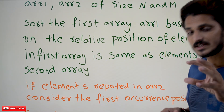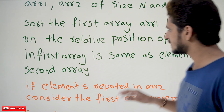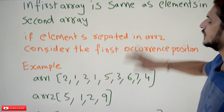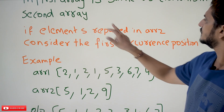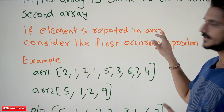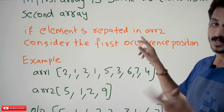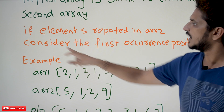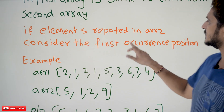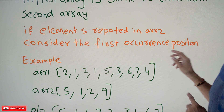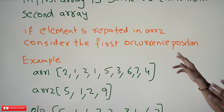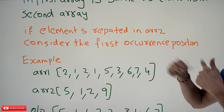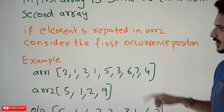With an example you are going to understand it better. If elements are repeated in array 2, if array 2 is having repeated elements, consider the first occurrence position. Based on the first occurrence position, we have to do the relative sorting.